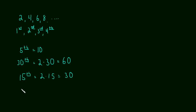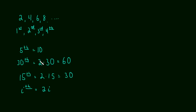What about the ith term? Any term — it could be the first, it could be the hundred and second, it could be any number you choose. Is there a formula that, based on its position, lets you figure out exactly the number? Yes, of course — it's two times i. Verify that you understand: if i is one, the first term, it's two times one, which is two. If i is four, the fourth term, it's two times four, which is eight.